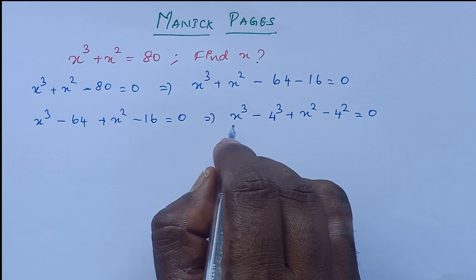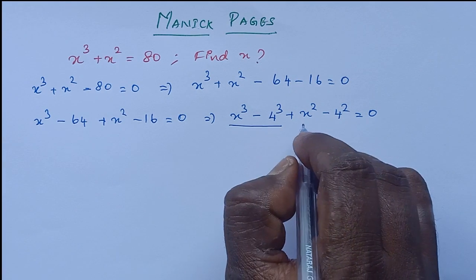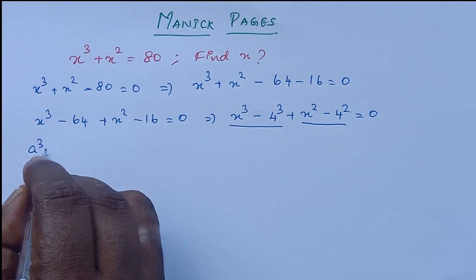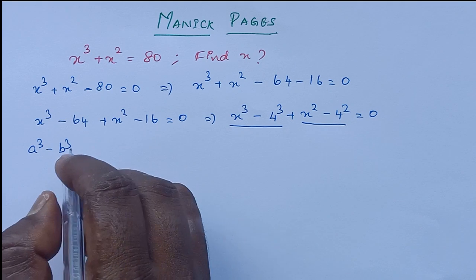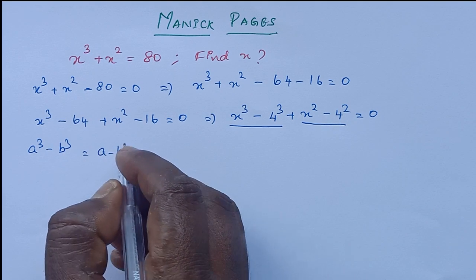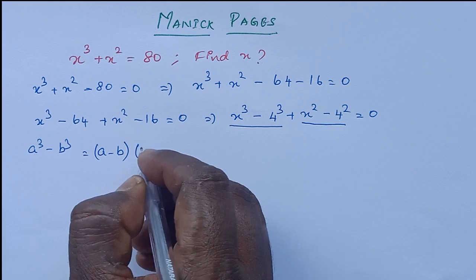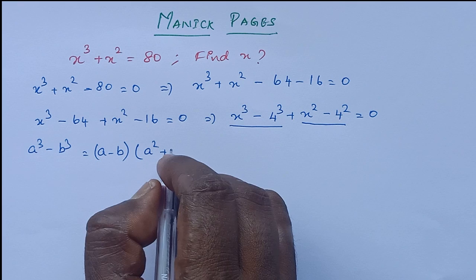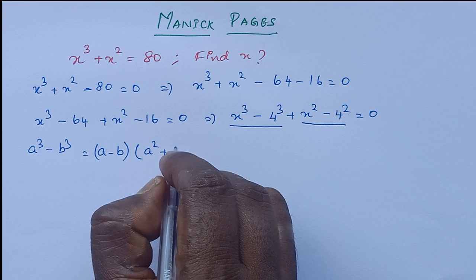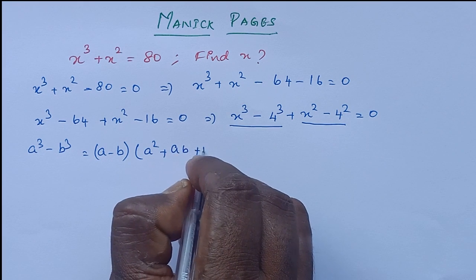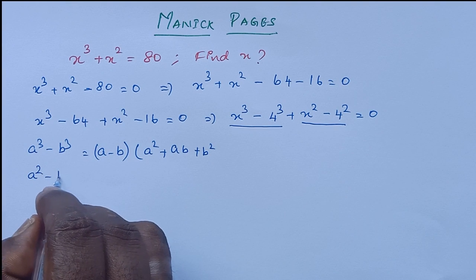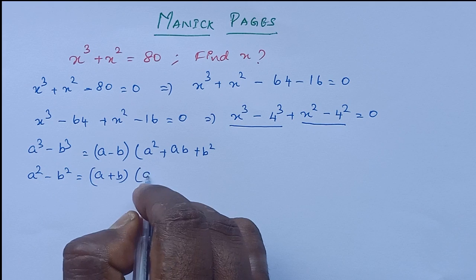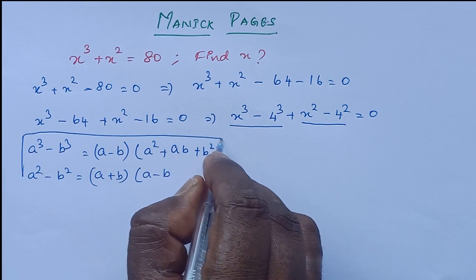So this is of the form a cube minus b cube and a square minus b square. The formula for a cube minus b cube is a minus b into a square plus a b plus b square. And a square minus b square formula is a plus b into a minus b. So we have two formulas.